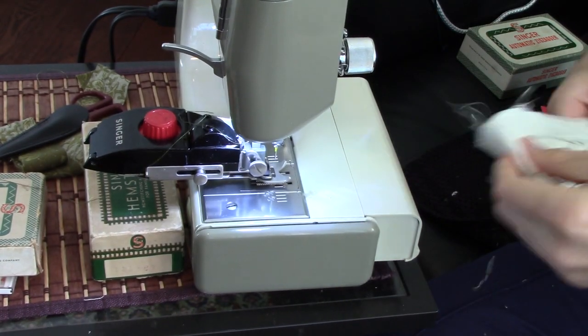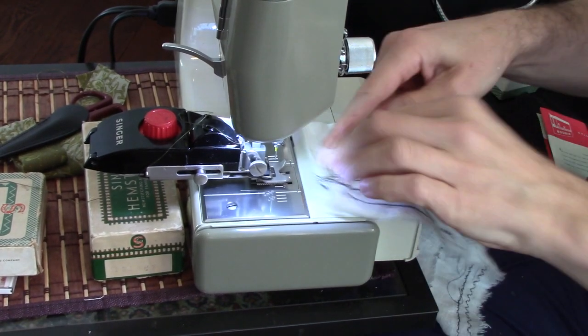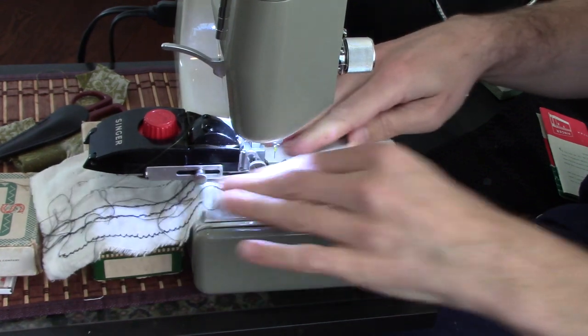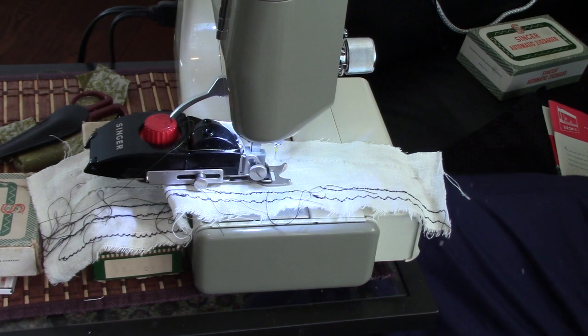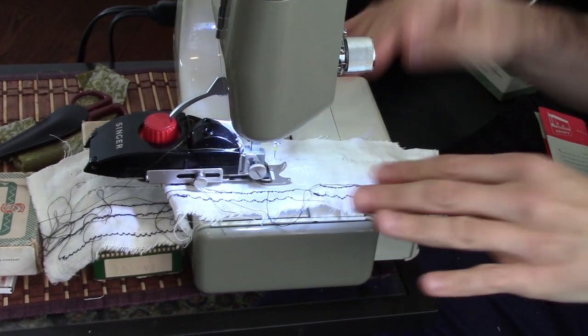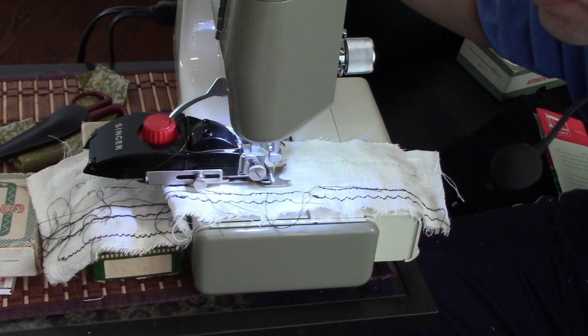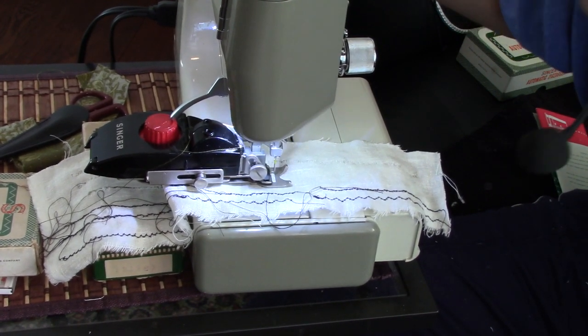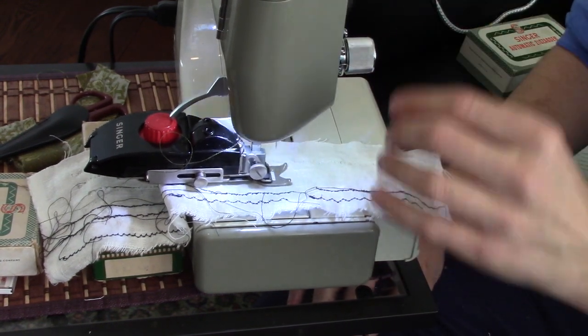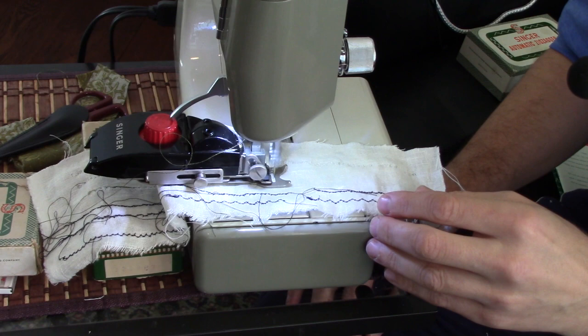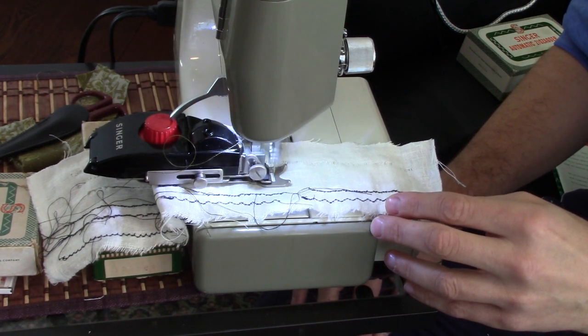So the next test I'm going to run is, I've put the straight stitch plate on here. So we're going to pretend that we're trying the same idea on a straight stitch machine. So we've got a smaller hole, and this is more complicated because we're moving the fabric side to side. So I have no idea if I've got the settings right yet on this, but we're going to try.